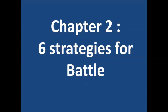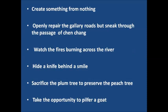The six strategies for battle mentioned in the text are: first, create something from nothing; openly repair the gallery roads but sneak through the passage of Chan-Chang; watch the fires burning across the river; hide a knife behind a smile; sacrifice the plum tree to preserve the peach tree; and take the opportunity to pilfer a goat. Let us go through these strategies one by one.